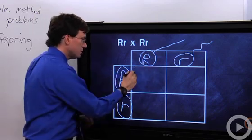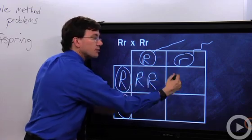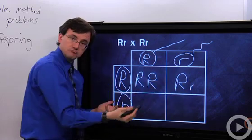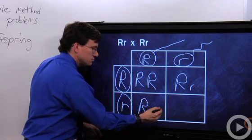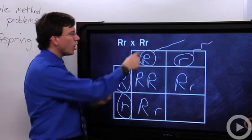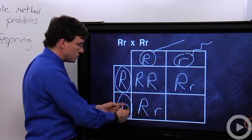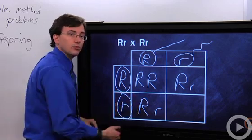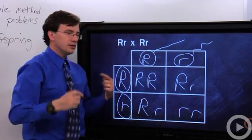Alright, so now we make some babies. So we have a big R, big R, a big R combines with a little r. Getting the point here? We have another big R. Now, just as a little technique thing, you always put the dominant allele first, even if you're thinking, but that one came from the left. No, you put the dominant one first. And then my last little guy over here is a little r, little r.